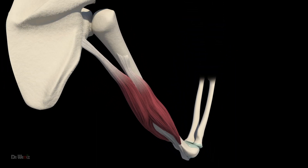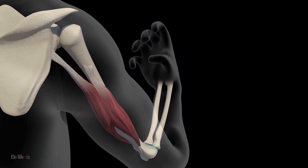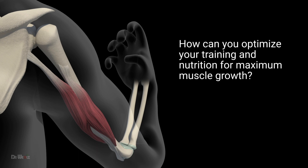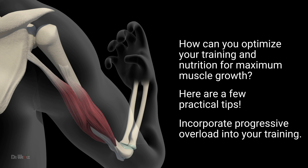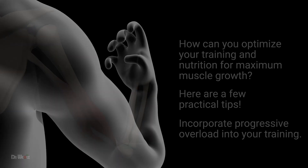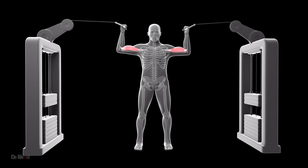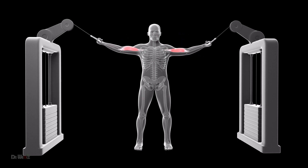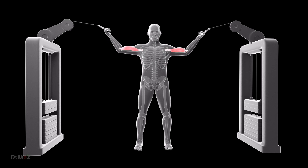So, how can you optimize your training and nutrition for maximum muscle growth? Here are a few practical tips. Incorporate progressive overload into your training — this means gradually increasing the weight or resistance you're using over time to continue challenging your muscles and stimulating hypertrophy.